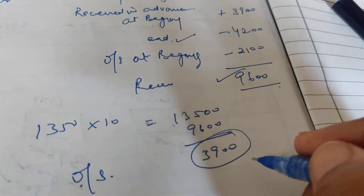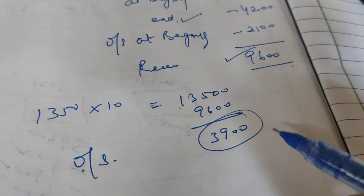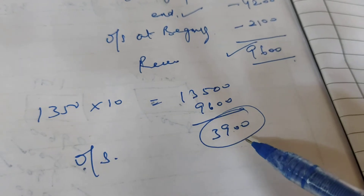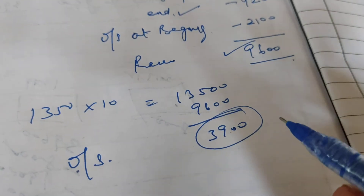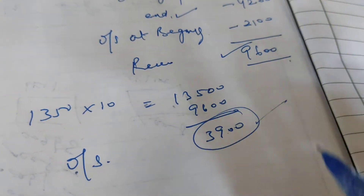This outstanding of 3900 will go on the balance sheet on the assets side.